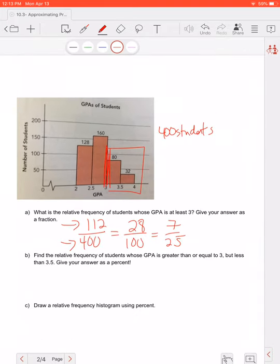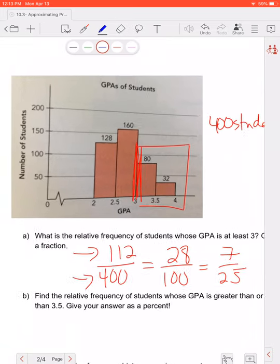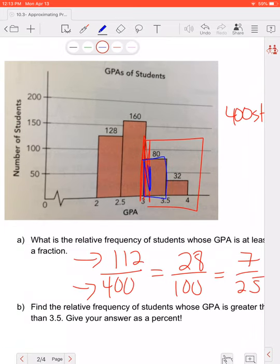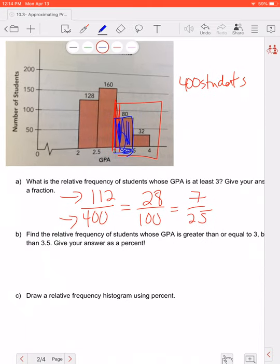Next it says find the relative frequency of a student whose GPA is greater than or equal to 3 but less than 3.5. So that would be just this little bar here. It says greater than 3 but less than 3.5, so we don't want to go over the 3.5 like we did in part A. So that would just be simply 80 out of 400. And if we do 80 divided by 4, that will give us 20 out of 100. And 20 goes into both of them so we can do 1 out of 5. So 1 out of 5 students have a GPA between 3 and 3.5.